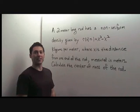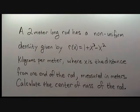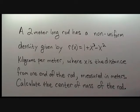This problem is about calculating the center of mass. A 2-meter long rod has a non-uniform density given by ρ(x) = 1 + x³ − x² kilograms per meter, where x is the distance from one end of the rod, measured in meters. Calculate the center of mass of the rod.